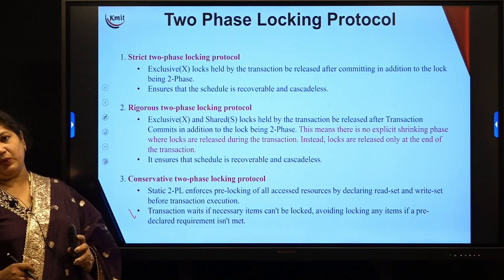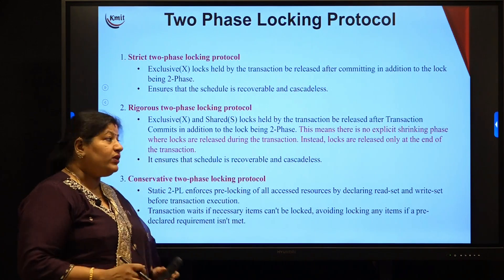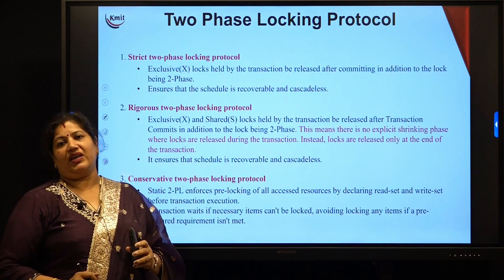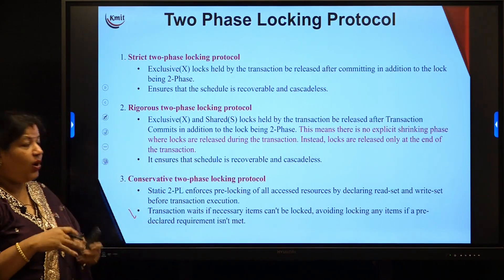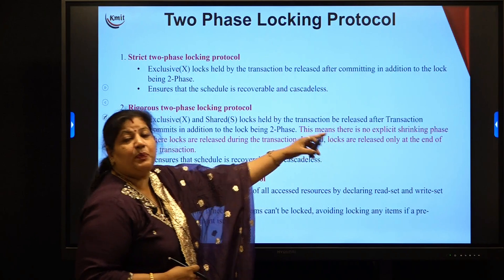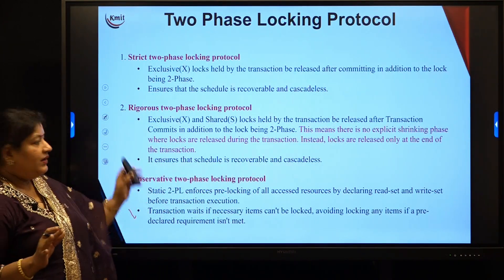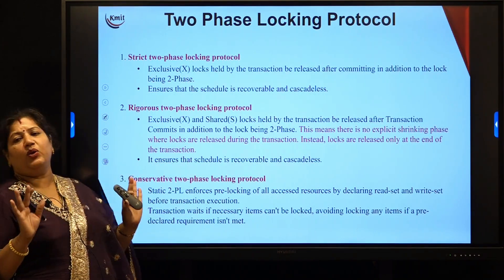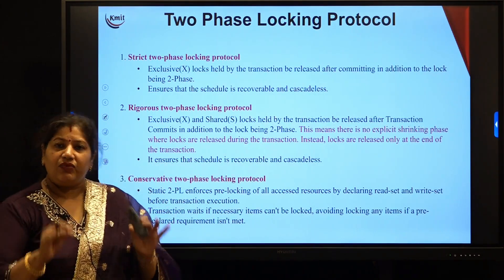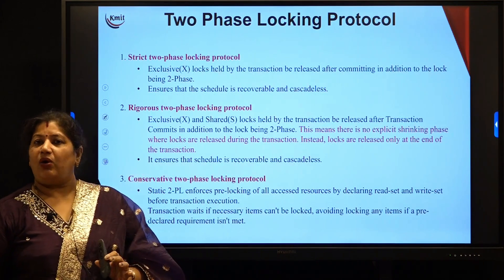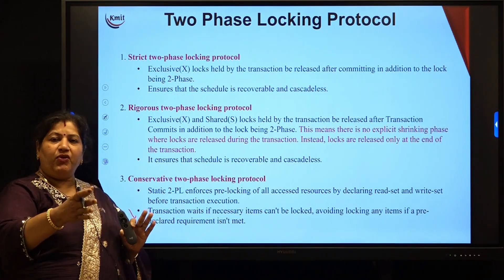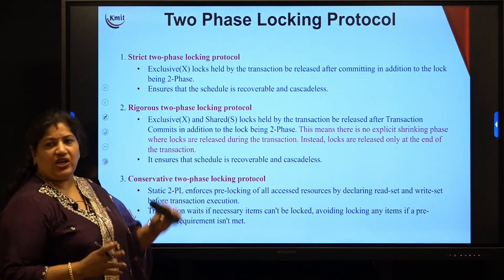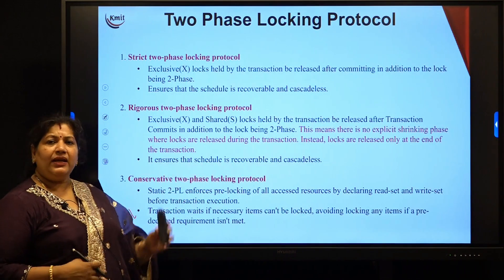In the rigorous two-phase protocol, both exclusive as well as shared locks are released only after the transaction is committed — even the shared lock is not released during execution. That means there is no explicit shrinking phase where locks are released during the transaction. Instead, locks are released only at the end of the transaction. When everything is done, all locks are released together: acquire all locks, perform operations, complete, then release all locks. This ensures a recoverable and cascadeless schedule.